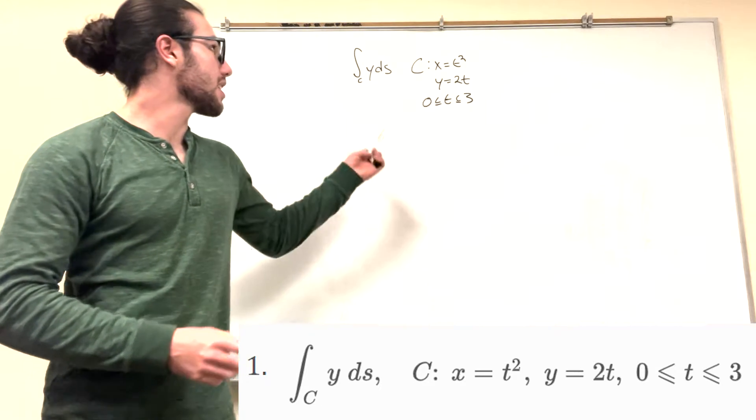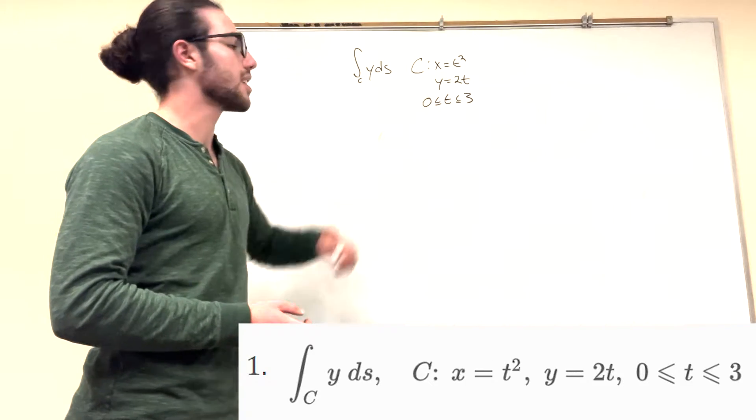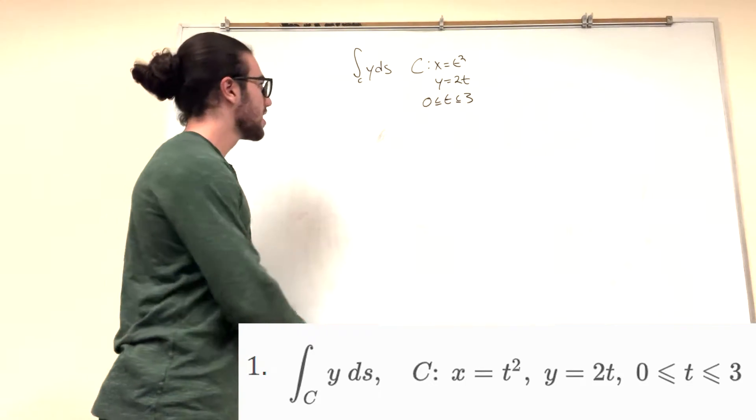What's up Cal gang? We have this plane curve problem right here and it wants us to find this integral with these lines of the curve. So what do we need to do?